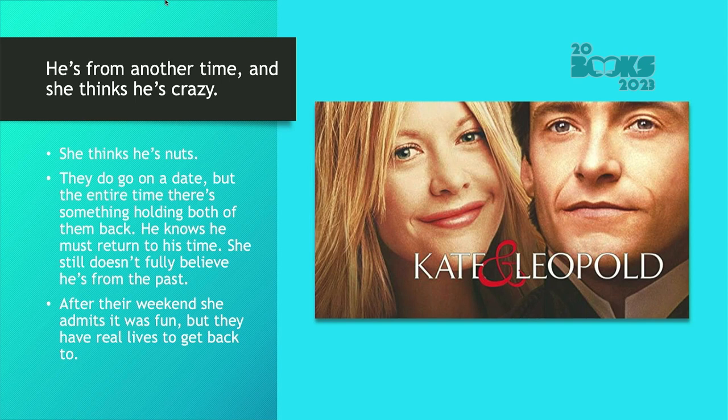Another one: Kate and Leopold — and this is the movie we're going to actually go through scene by scene, so if you haven't seen this one, I'm going to spoil the entire movie for you. He is from another time and she thinks he's crazy, so she doesn't see him as a potential person to fall in love with. They do go on a date, but the entire time there's something holding them back because he knows he has to return to his own time and she doesn't fully trust that he's from the past. After their weekend of fun, she admits it was fun, but they have lives to go back to — and this is what's keeping them apart.